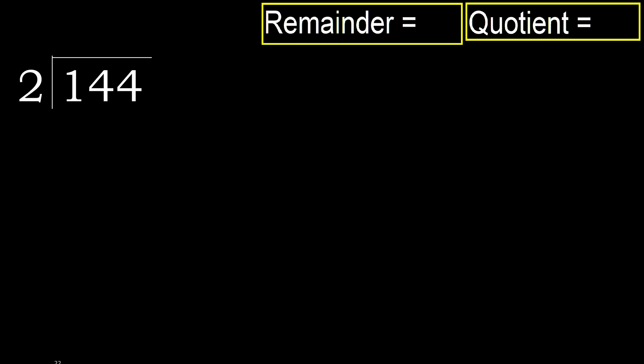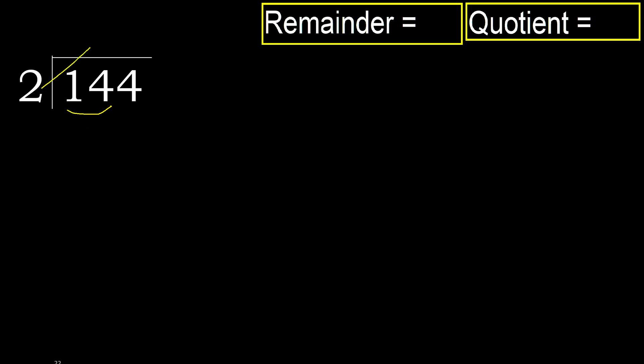144 divided by 2. 1 is less, therefore next. 14 is not less, therefore with 14, 2 multiply by which number is nearest to 14,